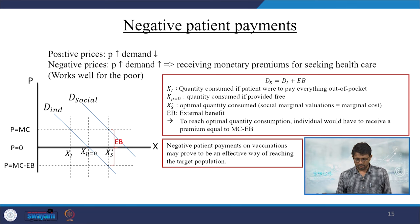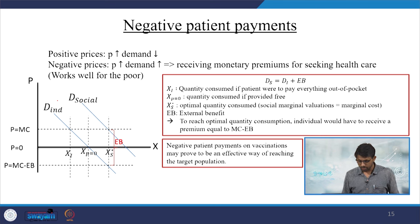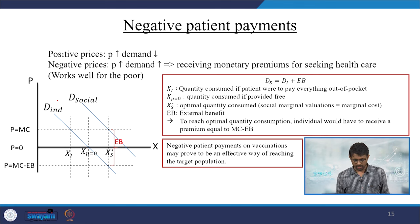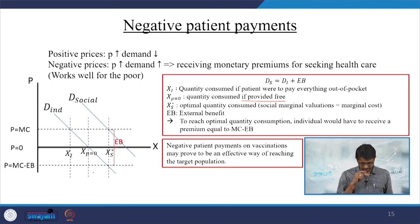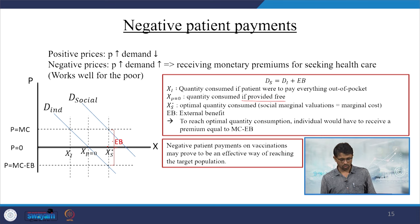An ideal demand curve is used to distinguish individual demand and social demand. In the equation: x1 is quantity consumed if the patient were to pay everything out of pocket, xp equal to 0 is quantity consumed if provided completely free, and x-star is the optimal quantity consumed where marginal social valuation equals social cost.